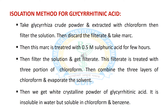Now we will discuss the isolation method for glycyrrhizinic acid. First, we take glycyrrhiza crude powder and extract it with chloroform, then filter the solution, discard the filtrate, and take the marc. The marc is treated with 0.5 molar sulfuric acid for a few hours. After that, we filter the solution, collect the filtrate, and treat it with three portions of chloroform. The three chloroform layers are combined and evaporated to get a white crystalline powder of glycyrrhizinic acid, which is insoluble in water but soluble in chloroform, benzene, and acetone.